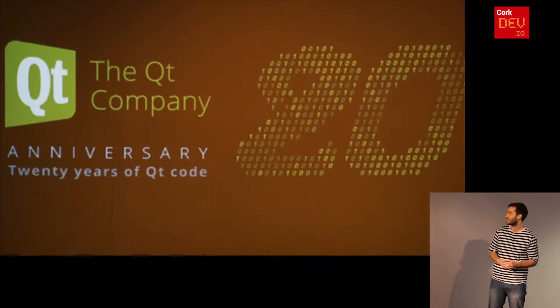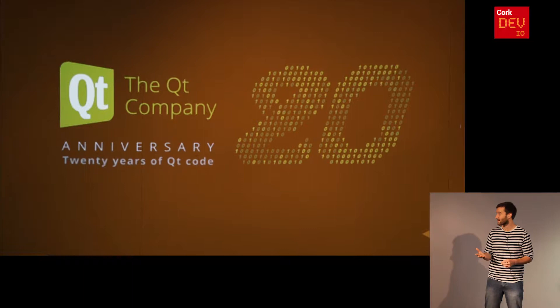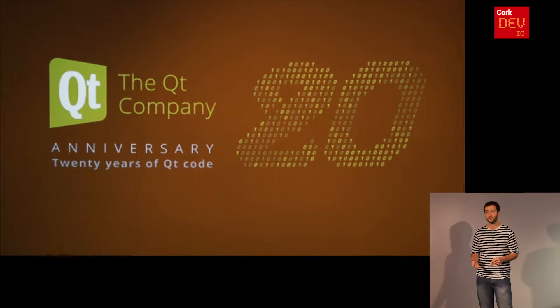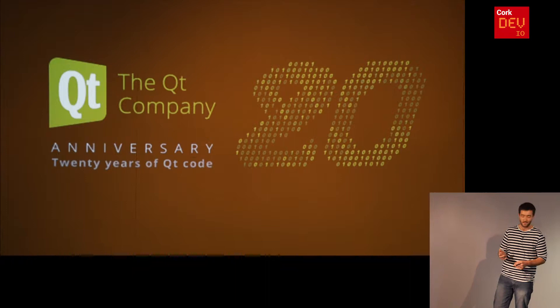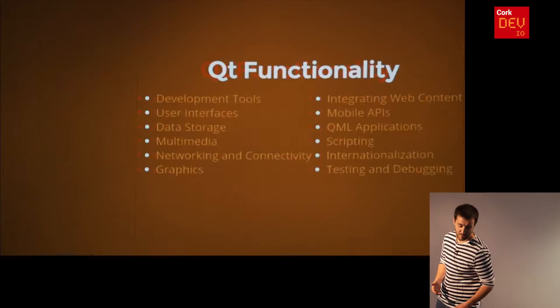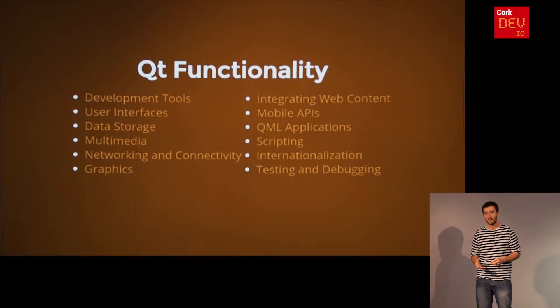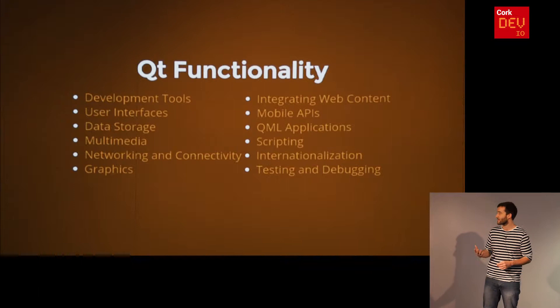The library itself is 20 years old, so it's been around for a while. I think they've basically solved the issue of cross-platform development in C++ at least for the desktop, and they're trying to innovate with technologies such as QML and JavaScript on mobile and embedded platforms. The library offers a lot of functionality: development tools, APIs for user interfaces, data storage, multimedia, networking, connectivity, concurrency, and graphics. It makes it very easy to integrate web content, has good support for mobile APIs and sensors, cross-platform ways to deal with them, QML applications, scripting, internationalization, and testing and debugging tools.